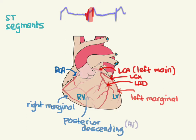All of this anatomy is important because it helps you localize where an MI might be. If you find that your patient has an anterior MI, that's obviously going to be the left anterior descending that's causing the problem. If you have a septal MI, then those are going to be the septal branches of the LAD — again, it's the LAD that's probably the problem. A lateral MI is going to be probably the left circumflex that's blocked.